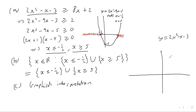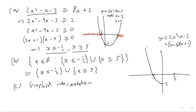For the graph y equals 2x squared minus x minus 3, the y-intercept is minus 3. Factorizing gives roots at x equals 3 over 2 and x equals negative 1, so we can sketch that curve. Then the line y equals 8x plus 2 has a y-intercept of 2 and a gradient of 8 — quite a steep line — which we can add to the sketch.